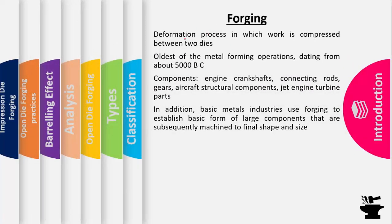Forging is a type of deformation process, so the work is compressive in nature. It is the deformation process in which the work is compressed between two dies. Deformation processes are compressive in nature, except in some cases, for example wire or bar drawing where we apply tensile forces. The forging operation is one of the oldest forms of metal forming process, dating back to 5000 BC. Common parts made using forging include engine crankshafts, connecting rods, gears, aircraft structural components, and some jet engine parts.